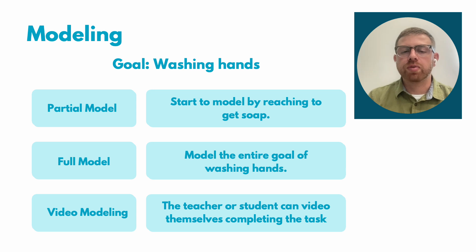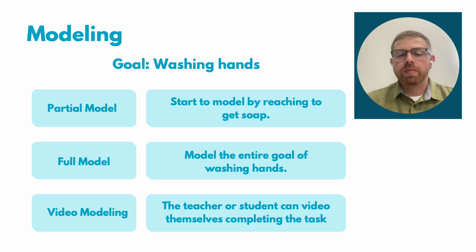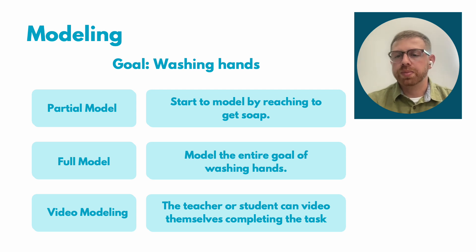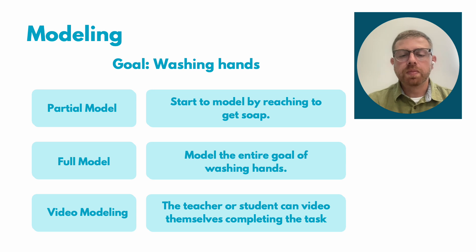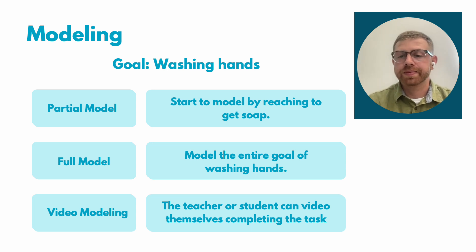For the goal of washing hands, a partial model would be something like starting to model by reaching to get the soap — just something to get somebody started. A full model would be to model the entire goal of washing hands.